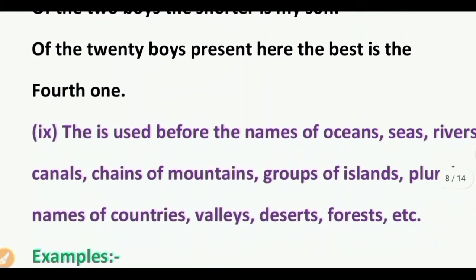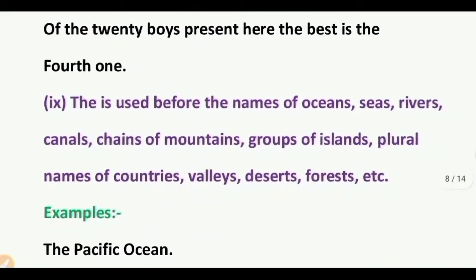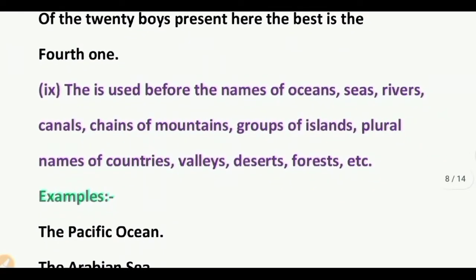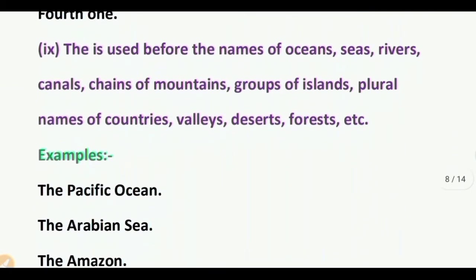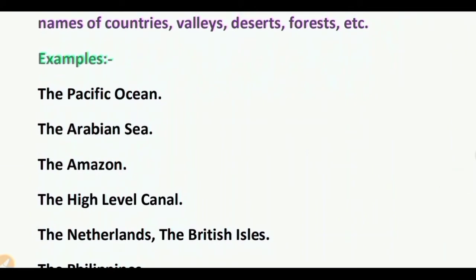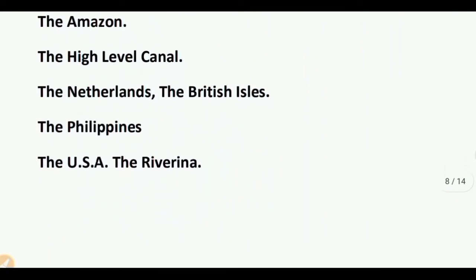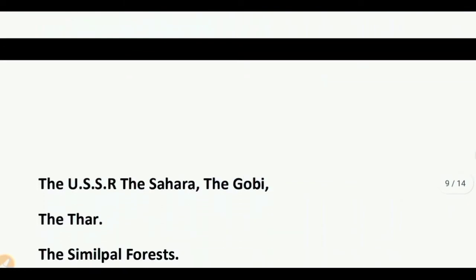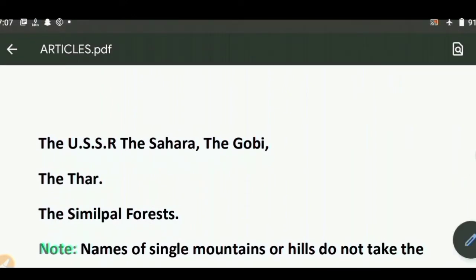Point 9: 'The' is used before the names of oceans, seas, rivers, canals, chains of mountains, groups of islands, plural names of countries, valleys, deserts, forests, and cities. Examples: the Pacific Ocean, the Arabian Sea, the Amazon, the High Level Canal, the Netherlands, the British Isles, the Philippines, the USA, the Riverina, the USSR, the Sahara, the Gobi, the Thar, the Shivalik Forest.